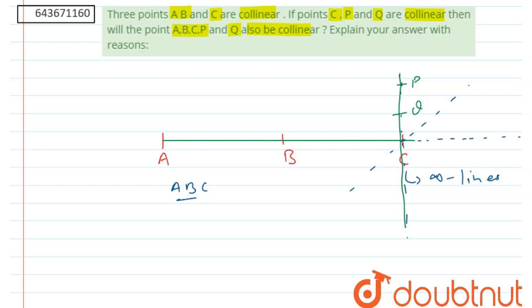In a particular case, when C, P, Q lie alongside this same line A, B, C, then C, P, Q can be collinear. It is only a particular case.